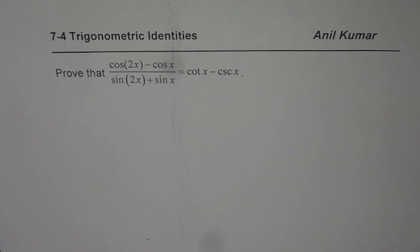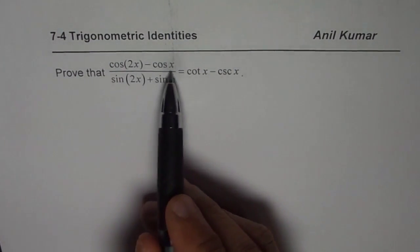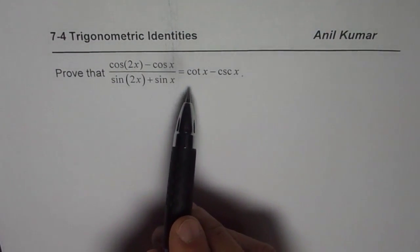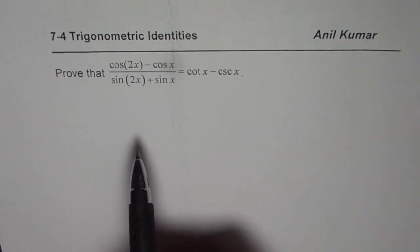I'm Anil Kumar and now let us solve this trigonometric identity which involves double angle. We have cos(2x) minus cos x divided by sin(2x) plus sin x equals to cot x minus cosecant x.